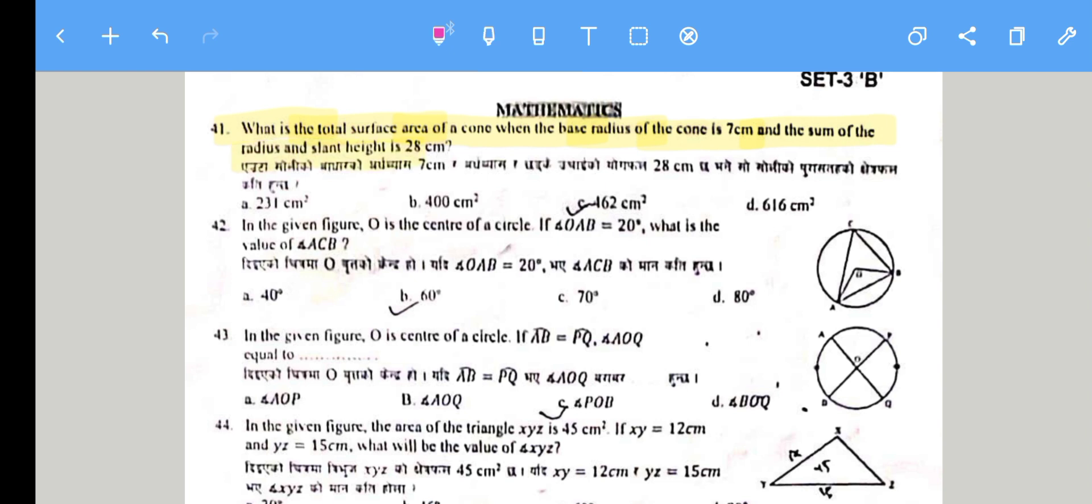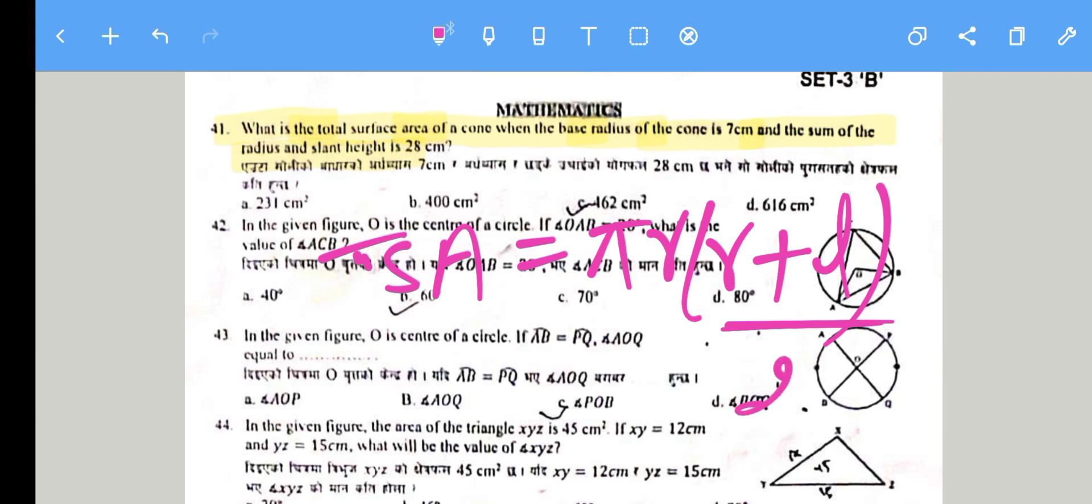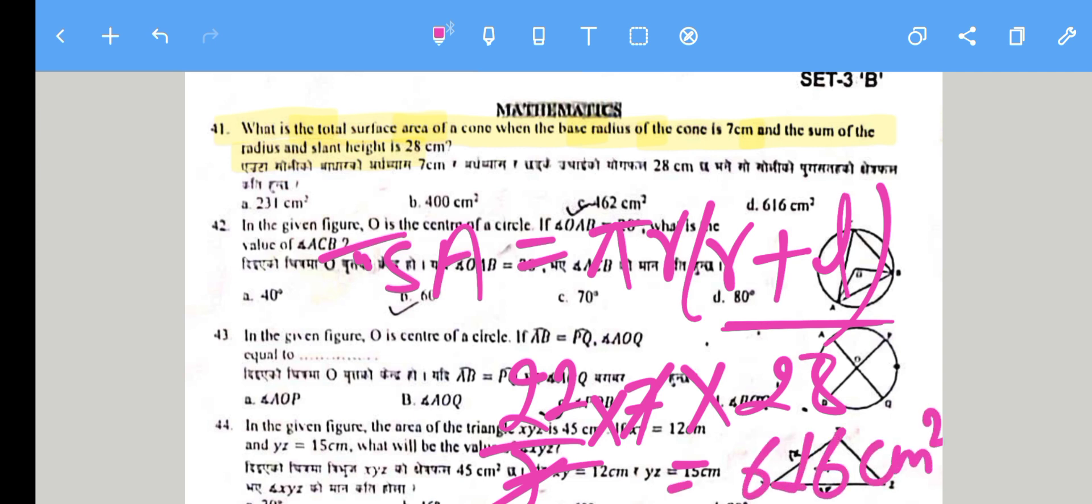The formula for total surface area of a cone is TSA = πr(r + l). Substituting the values: 28 × 22/7. Since the sum is 28, this simplifies to 7.